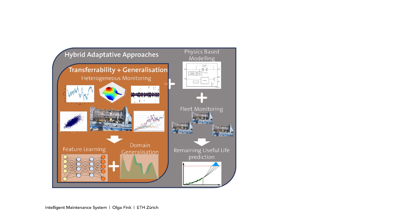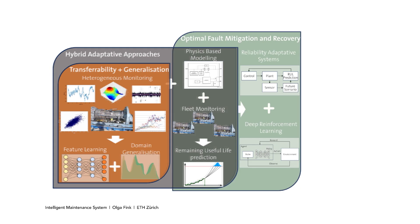The third layer focuses on optimal fault mitigation and recovery actions. This is where we develop prescriptive algorithms that capture the system condition and provide recommendations on how the system should be operated — in order to prolong the remaining useful life, but also potentially to complete a mission profile or to reach the workshop where main maintenance can be performed.